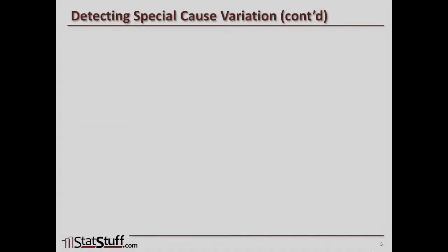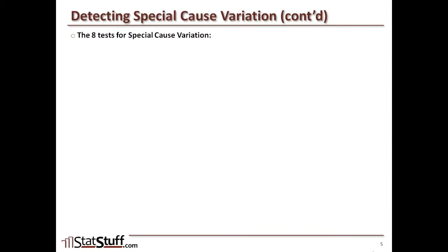Now let's talk about all eight tests for special cause variation. As I describe these tests, I want to preface by saying these aren't hard and fast rules. They're the types of tests that could indicate where there is some special cause variation, but it's not a guarantee.